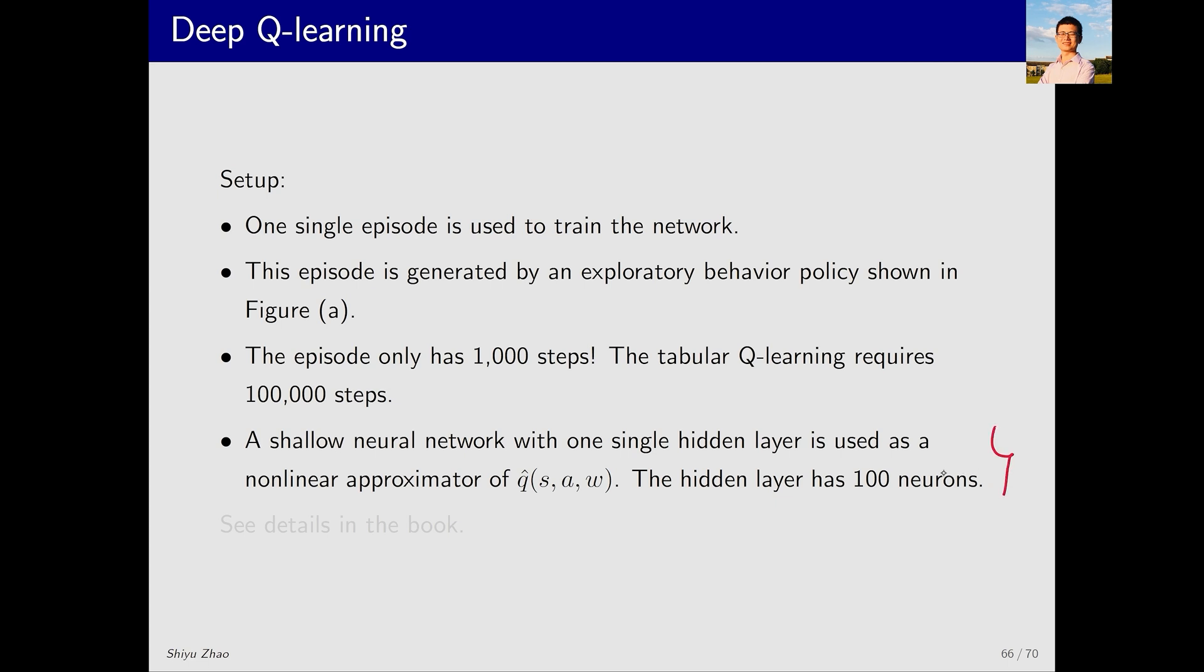The neural network used here is a shallow network. Although it's called deep Q-learning, the neural network doesn't have to be deep because it is just a function approximator. Here we use a three-layer network: an input layer, an output layer, and a hidden layer with only 100 neurons. For more details, you can refer to my book.